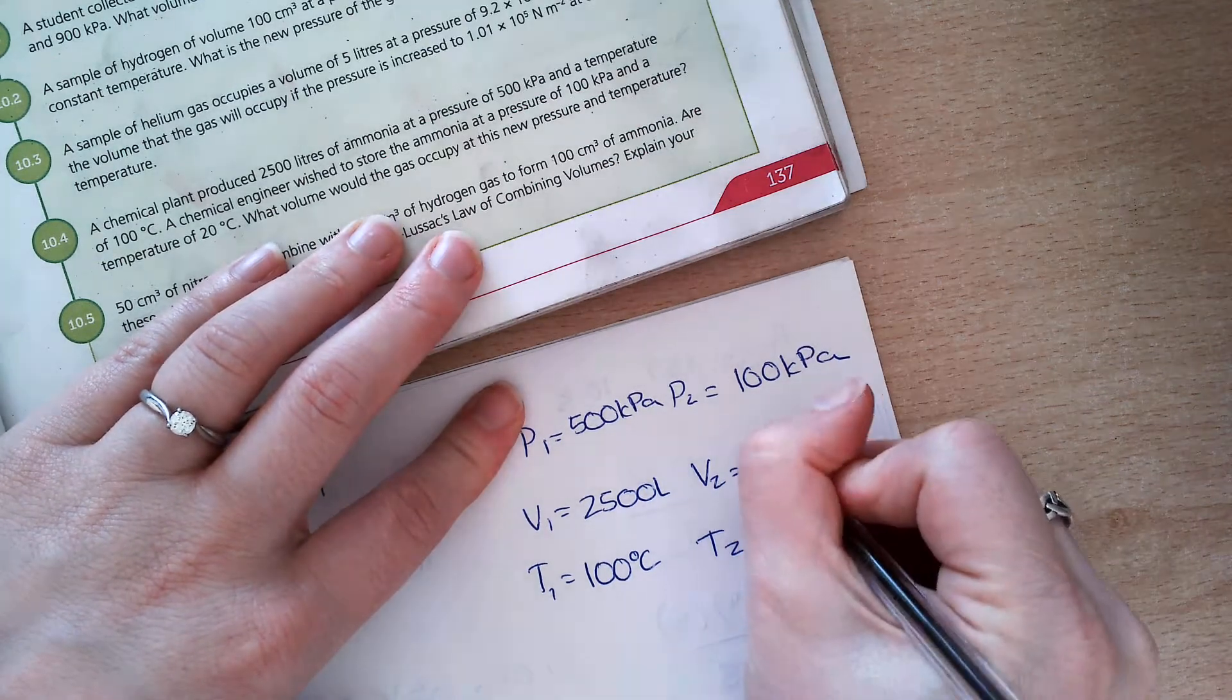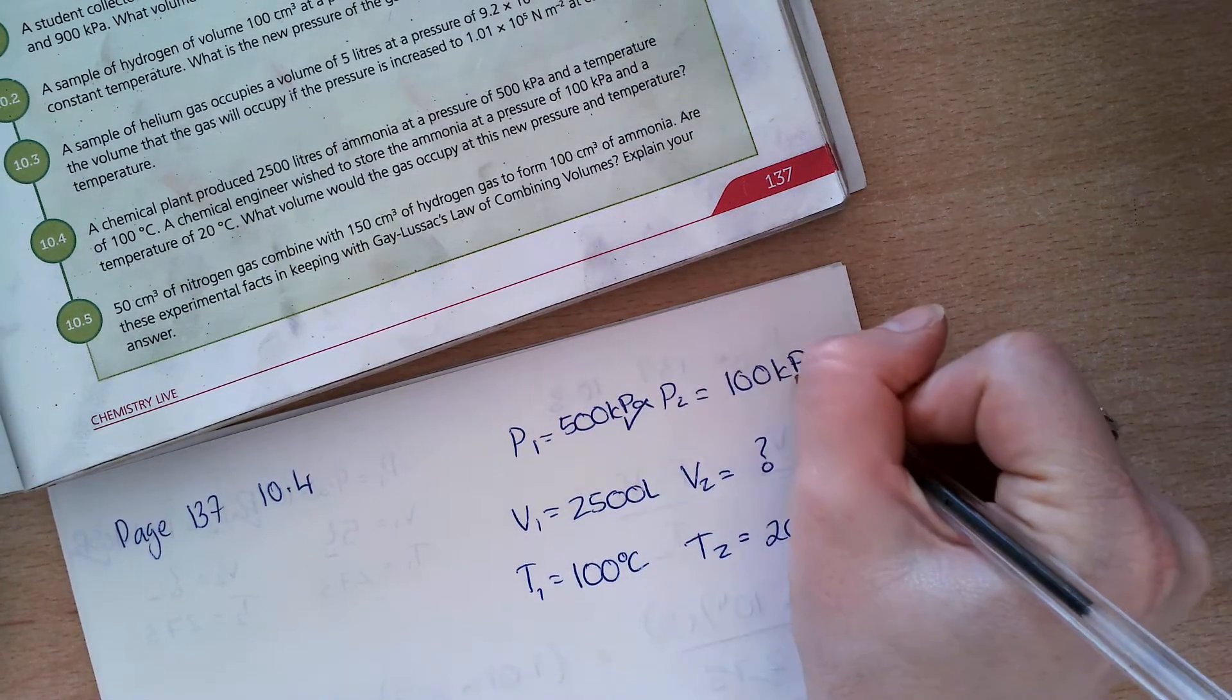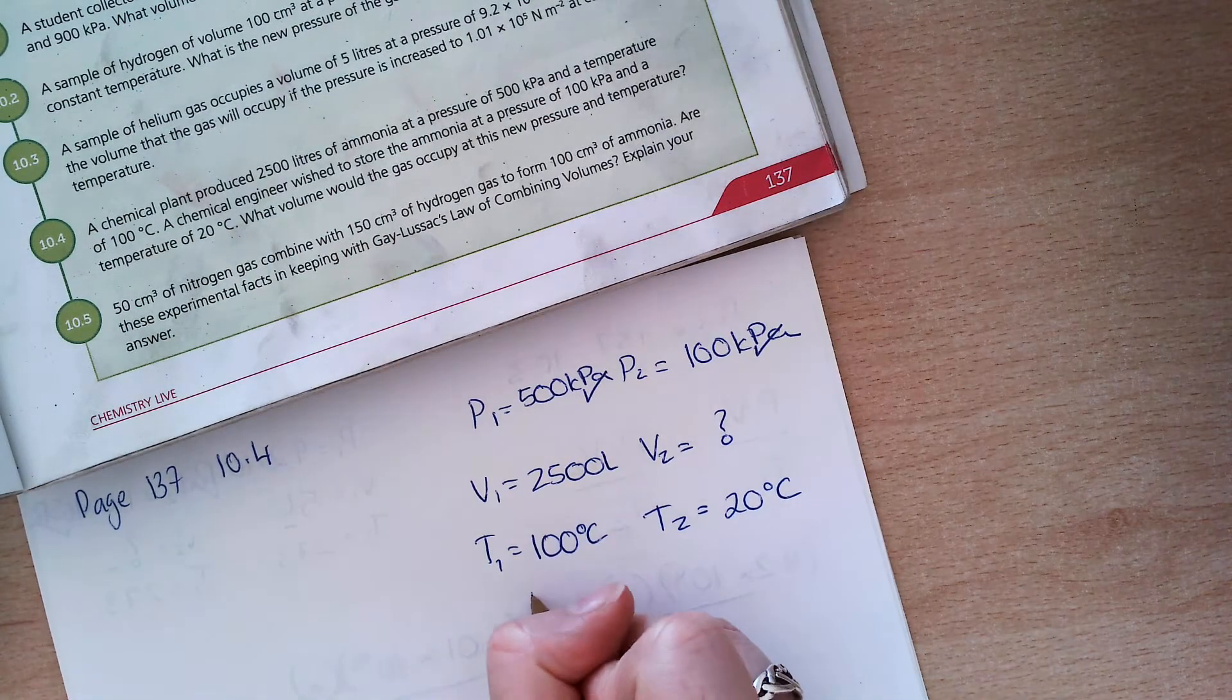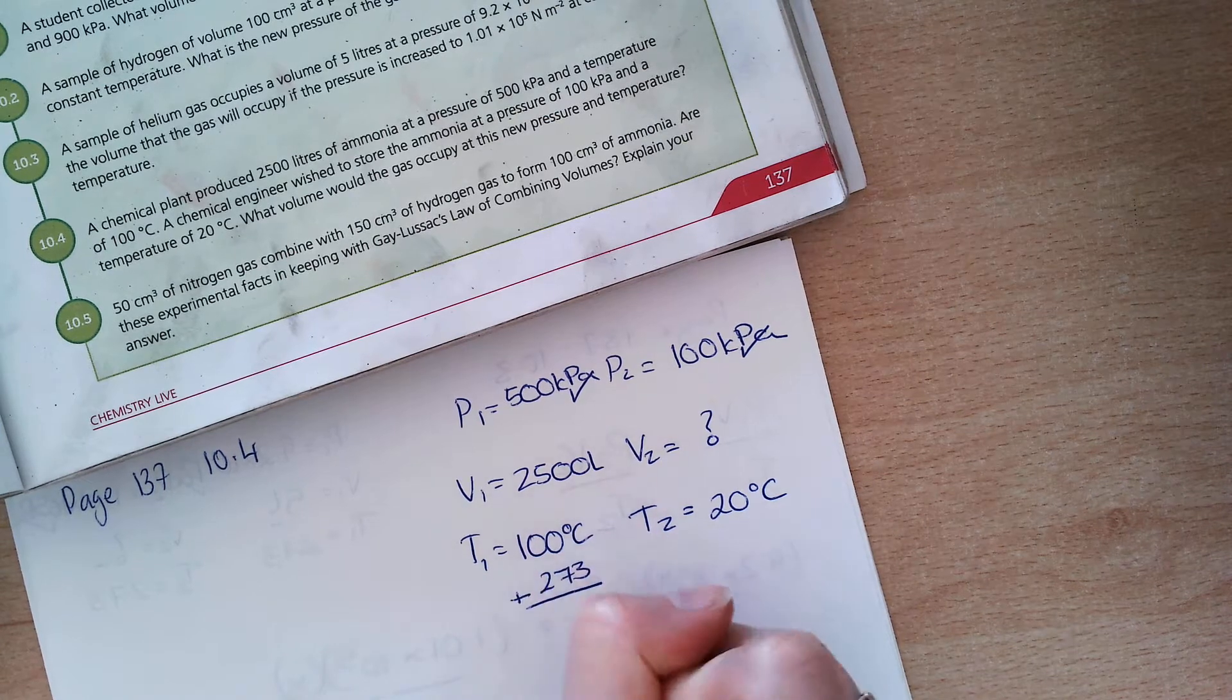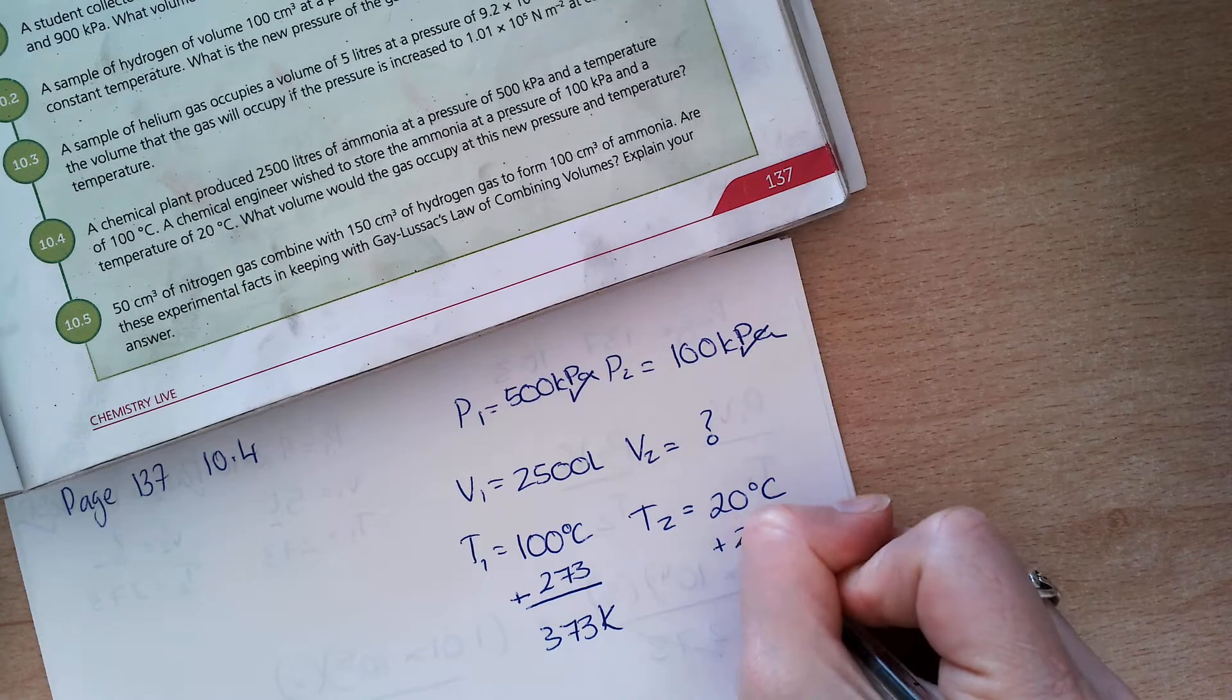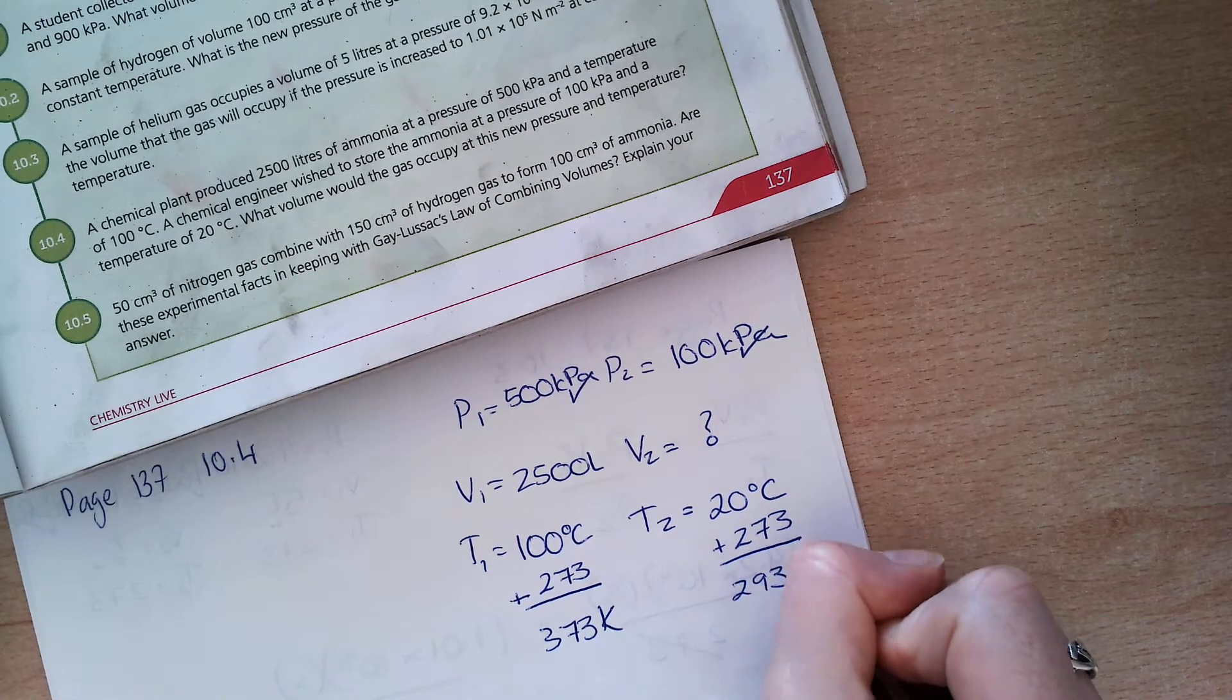What volume would this gas occupy at STP? If I look, these are fine in kilo pascals. But remember, I have to convert these into Kelvin. So, that's 373 Kelvin. I have to add on 273. And that is 293 Kelvin.